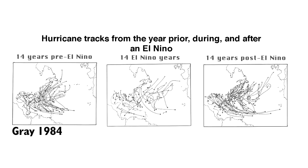I wanted to show you guys this graphic that I found really interesting. This shows you pre-El Niño years, El Niño years, and post-El Niño years. I am forecasting an El Niño later this year, and I find it very interesting that during El Niño years there is below-average tropical activity, and in years before there is above-average tropical activity. If you look back at last year, it was very above average as far as tropical activity goes, and that kind of ties it all together.